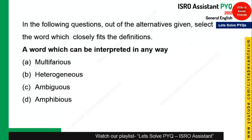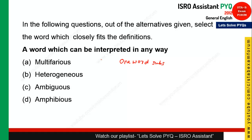This is a good question from one-word substitution. A word that can be interpreted in more than one way is called 'ambiguous'. If you say something that can be understood in two different ways, that is ambiguous writing. The word is 'ambiguous' — option C is the right answer.